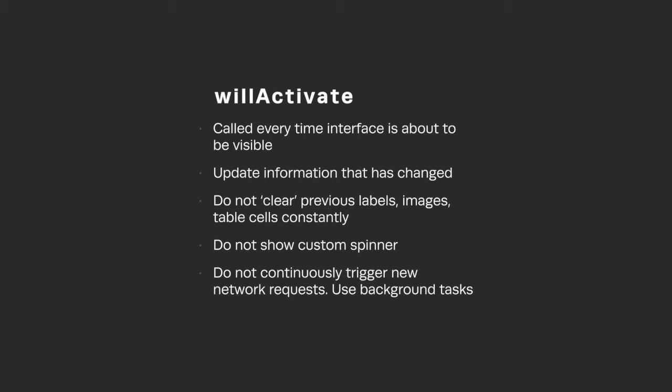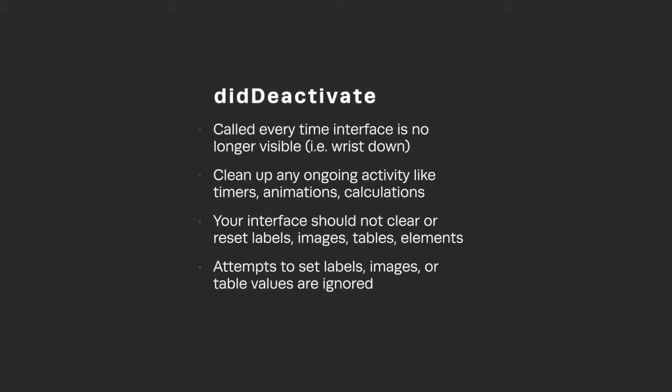By doing this the user doesn't see your entire interface go black for three seconds and flash back when your request is done, or labels jumping to 'calculating' and back. It will actually make sense for the user to see specific information get updated. The system provides a little loading indicator in the top right and a last-updated label, so they'll know your app is getting the latest information. When the user puts their wrist down and the screen goes off, `didDeactivate` is called — use this as an opportunity to clean up animations or calculated state, but the system will block attempts to change label values or remove things off screen.